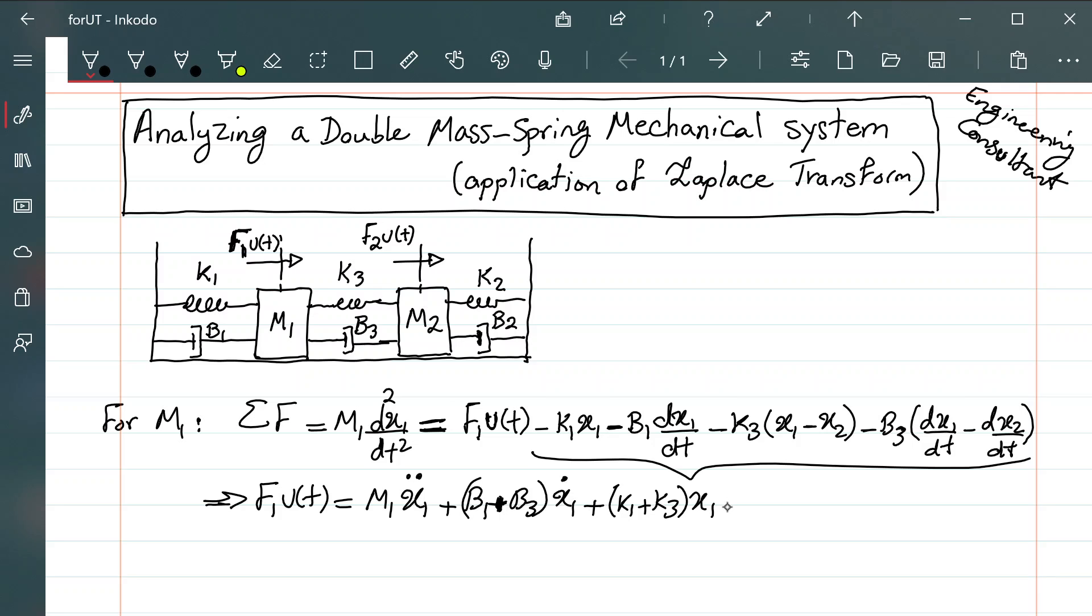So, we have, let's move everything here to the other side. So, we have f1 u(t) equal to m1 times the second derivative, and then we have plus (b1 + b3) times the first derivative, and then we have plus (k1 + k3) x1, minus k3 x2, minus b3 x2 dot.